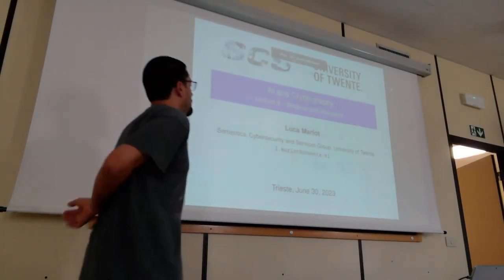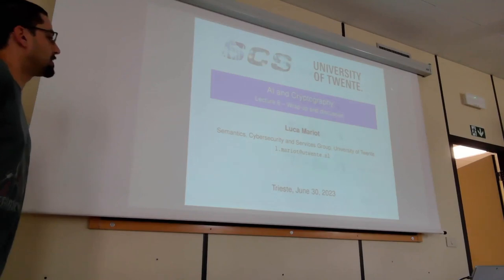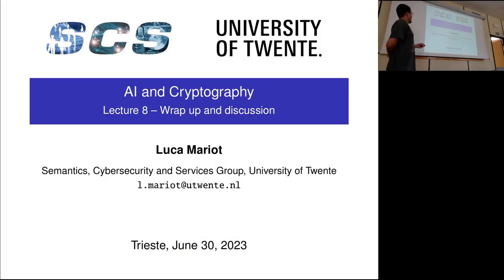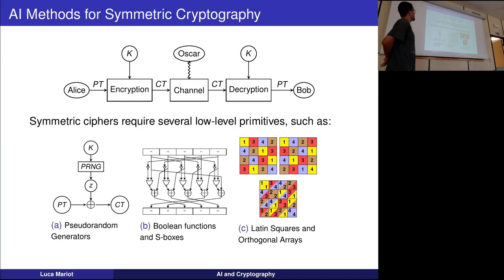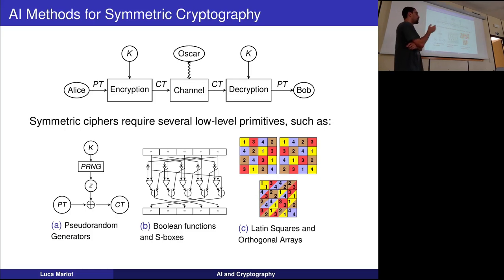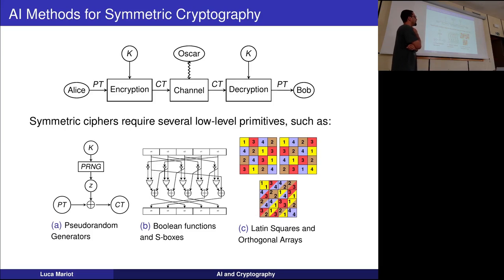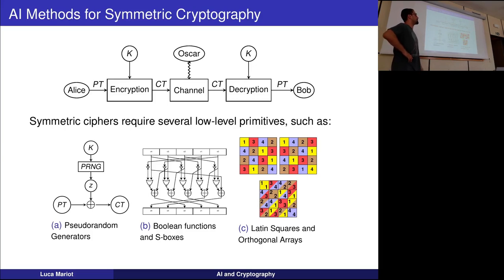Let's go for the closing of this course. During these lectures we saw two directions of considering artificial intelligence and cryptography. One direction was to use artificial intelligence for cryptography, to solve some design and analysis problems in cryptography. The other direction is using cryptography, such as secure multi-party computation, to solve privacy and security problems in machine learning.